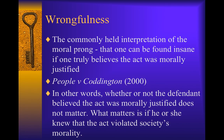With regard to the moral prong or wrongfulness, the most commonly held interpretation is that one can be found insane if one truly believes the act was morally justified. However, in People v. Coddington in 2000, the court noted that the morality in question did not have to originate from Judeo-Christian beliefs or a belief in God at all, but must come from more than the individual's belief system. Through case law, the courts have found that the question is not whether the person's belief regarding the morality of the act, but whether or not he or she knew the act violated collective morality — does society find that murder is collectively wrong?